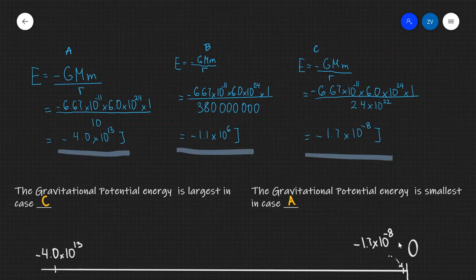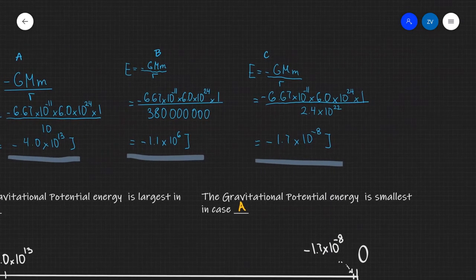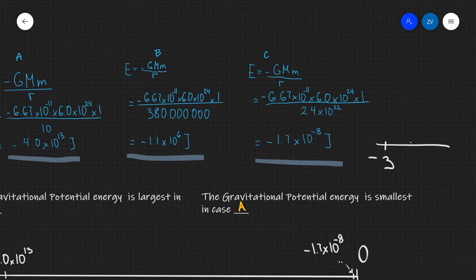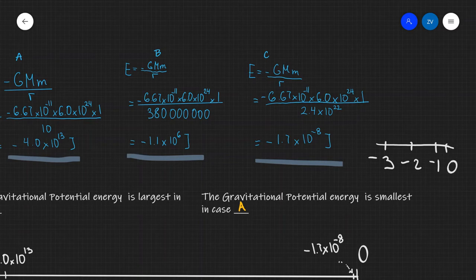Now let me just illustrate this. Some of you guys might be thinking how can this number minus 4.0 times 10 to the 13 be smaller than minus 1.7 times 10 to the power of minus 8. Well let's imagine the number line. It's for exactly the same reason why minus 3 is actually before minus 2 and then minus 1 and then 0 and then 1 on the timeline. So minus 1 is larger than minus 2 which is larger than minus 3.